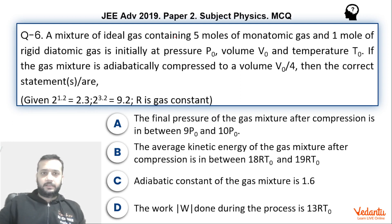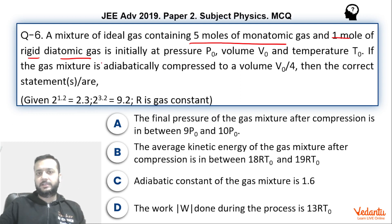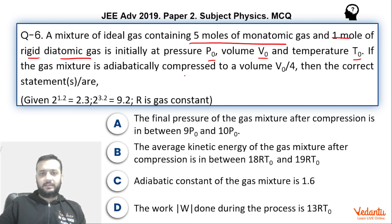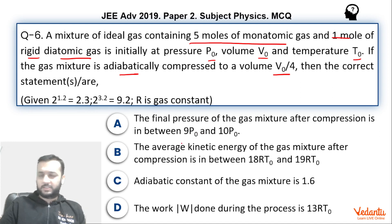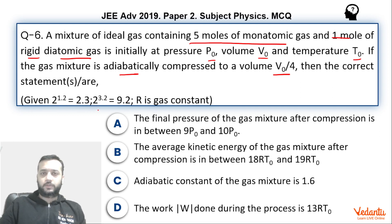Let's see what's happening here. There is a mixture of two gases: one is 5 moles of monatomic and the other is 1 mole of diatomic rigid — that means we have to ignore the vibrational degrees. The initial pressure of the gas is P0, volume V0, and temperature T0. We are compressing the mixture adiabatically to the final volume V0/4. Then we have to comment upon the value of work done, the kinetic energy, the final pressure, and the adiabatic constant, that is the value of Cp by Cv.